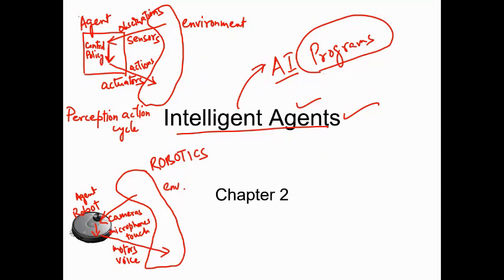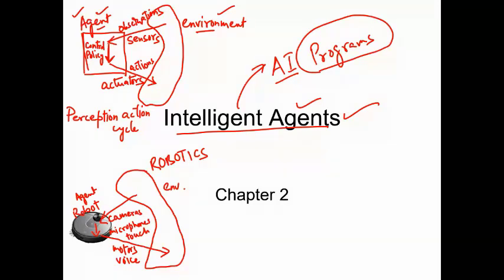Let's have a look at intelligent agents at a glance. Let's say this is an agent, and this is an environment. Every agent is always interacting with the environment — so if there's an agent, there will be an environment, and the interaction between the agent and environment will always be there.